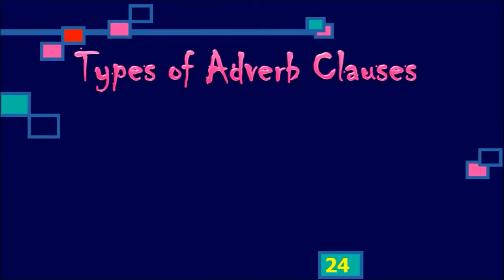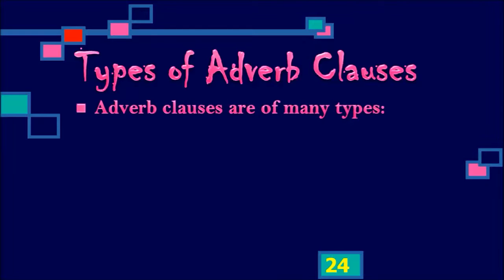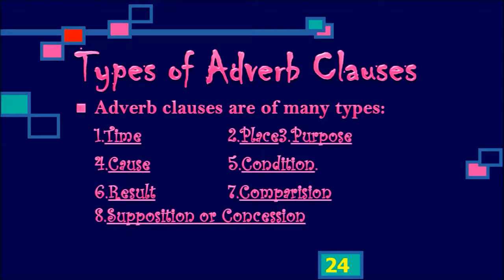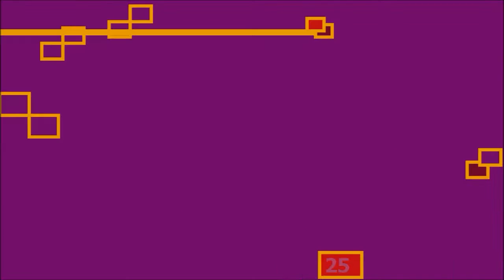Now it's time for types of adverb clauses. This is very important because adverb clauses are of many types. The types are: time, place, purpose, cause, condition, result, comparison, and supposition or concession. We will learn all these types of adverb clauses in the next slides.